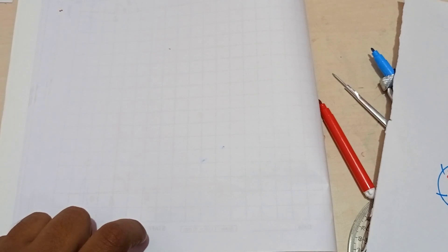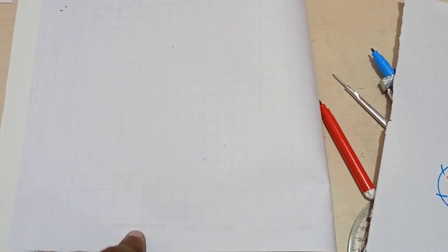Welcome to engineering visualization channel. Today we are going to learn how to construct an angle of 61.5 degree using compass.